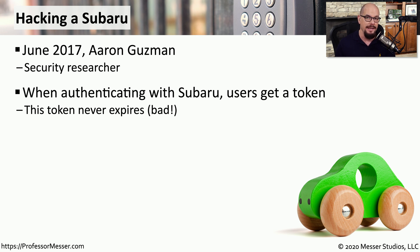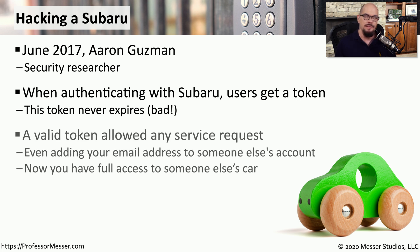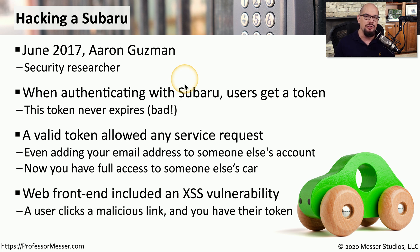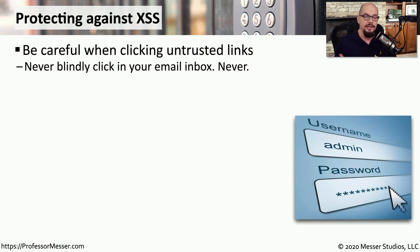This also meant that if anyone else gained access to this authentication token, they would be able to gain access to his account details. The authentication token provided access to service requests on the Subaru website — for example, adding a different user's email to a particular vehicle within account information. This meant that an attacker could add their email address to your car and have full access to the online capabilities available for your Subaru. Compounding this problem, the Subaru website had a cross-site scripting vulnerability in one of its input fields, meaning anyone logging in could have their tokens sent to an attacker who could then add their email and gain full access to your car.